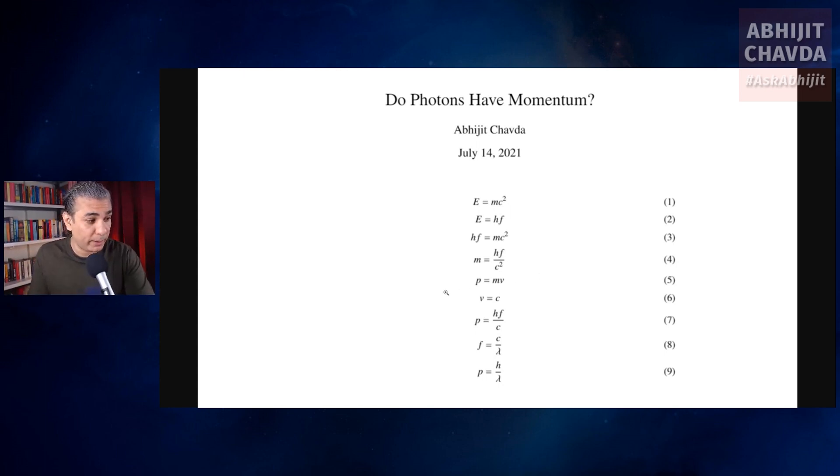As you said, the equation of momentum in classical physics is p equals mv, where v is the velocity of the particle. In the case of the photon, v, the speed or velocity, is the speed of light. So we put v equals c. And by combining these equations, we get p equals hf by c.